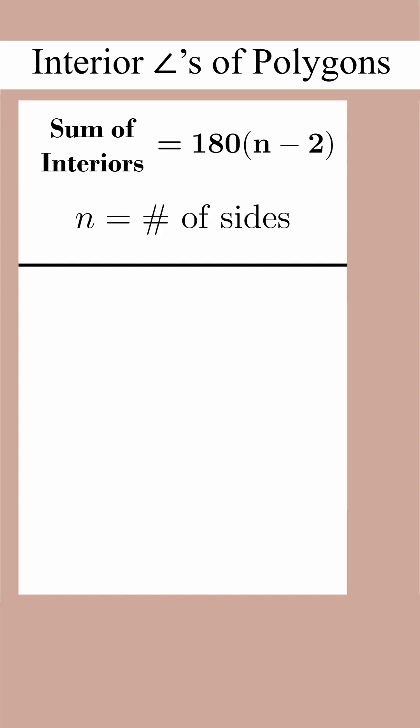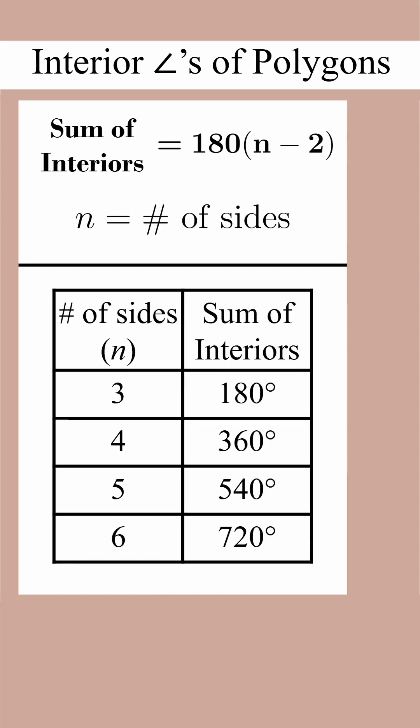Though the SAT will never ask you about a shape with more than six sides, you might just want to get familiar with this table. Notice an easy way to remember it: just remember there's 180 in a triangle, and then you add 180 each time you add a side.